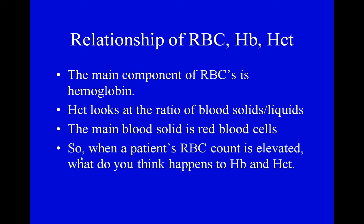What's the relationship of red blood cell, hemoglobin, and hematocrit? The main component of a red blood cell is hemoglobin. Hematocrit is the ratio of blood solids — red blood cells, white blood cells, and platelets — compared to liquids: plasma, clotting factors, and antibodies. The main blood solid is red blood cells because they're present in the millions. White blood cells are present in the thousands; platelets in the hundred thousands. So when red blood cell count is elevated, hemoglobin goes up and hematocrit goes up. Hydration affects these results: over-hydrated means cells appear fewer (lower hematocrit); dehydrated means cells appear more concentrated (higher hematocrit).